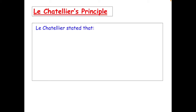Hi there. What we're going to have a look at today is how equilibrium — the position of equilibrium — can be changed by changing different conditions. The four ones we're going to look at are pressure, concentration, temperature, and catalyst.